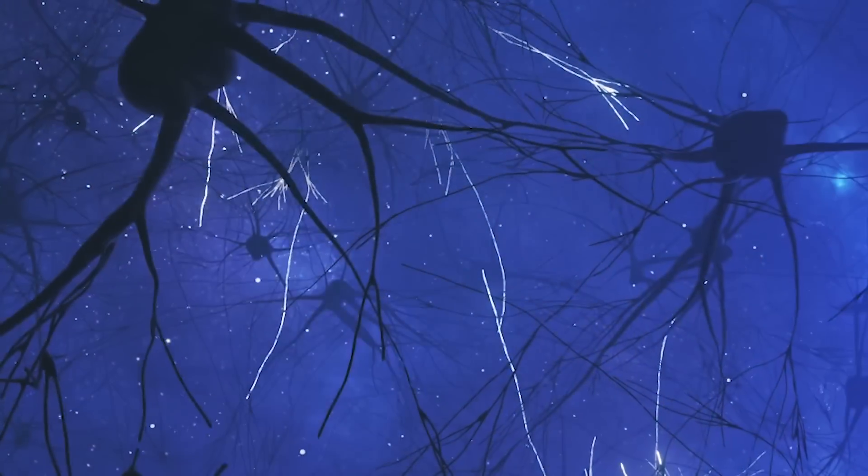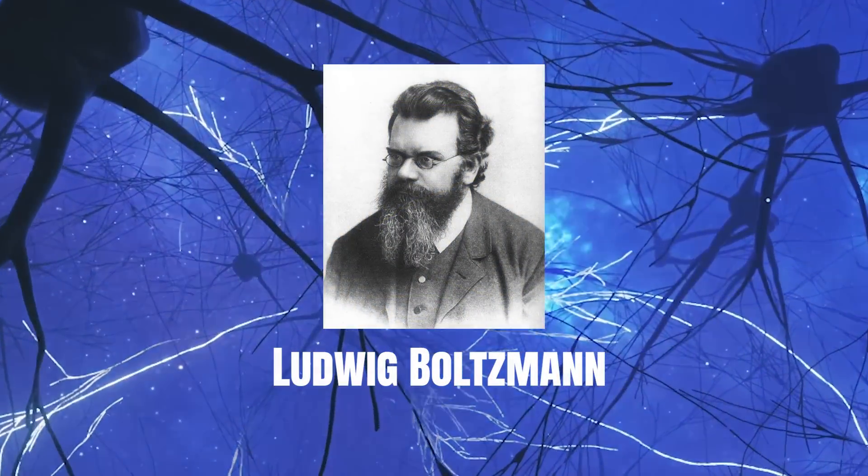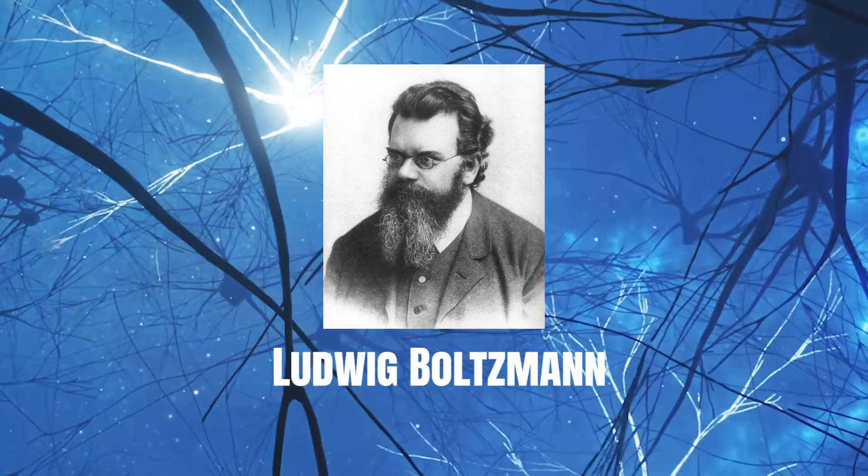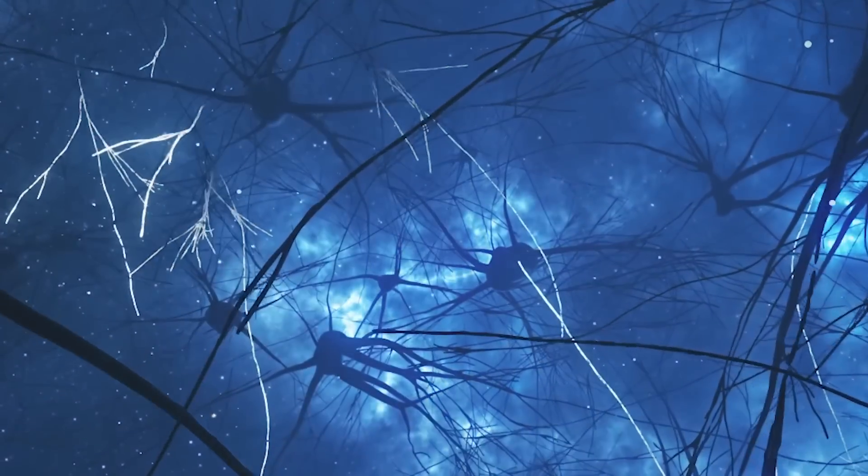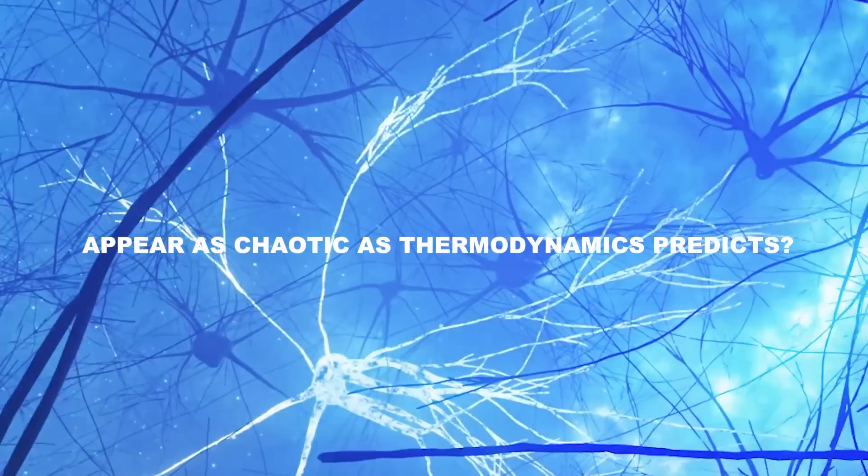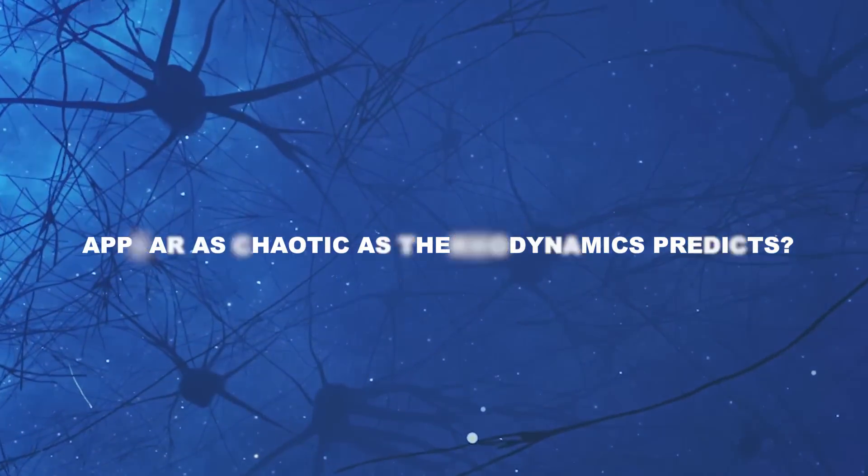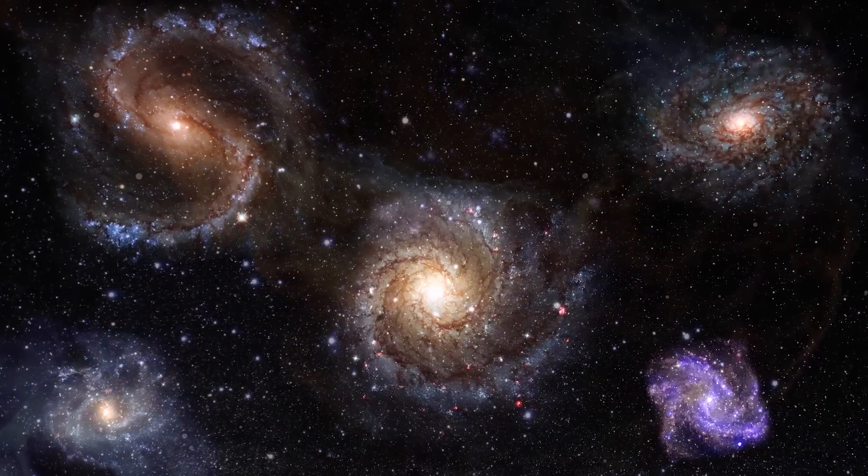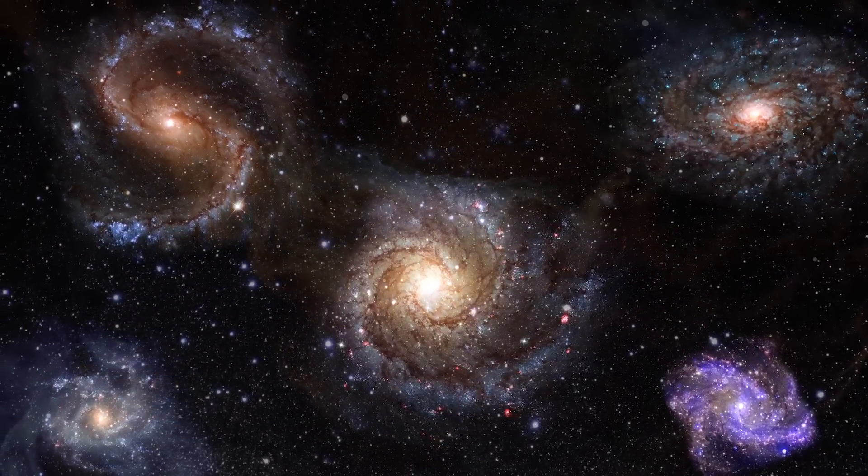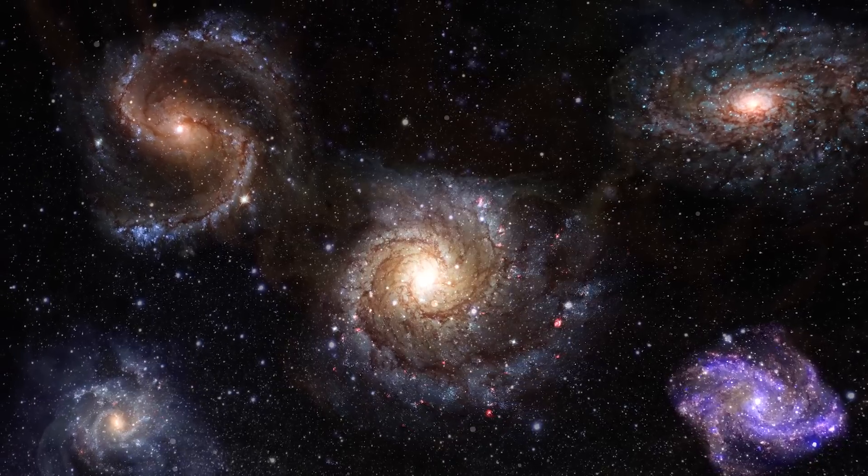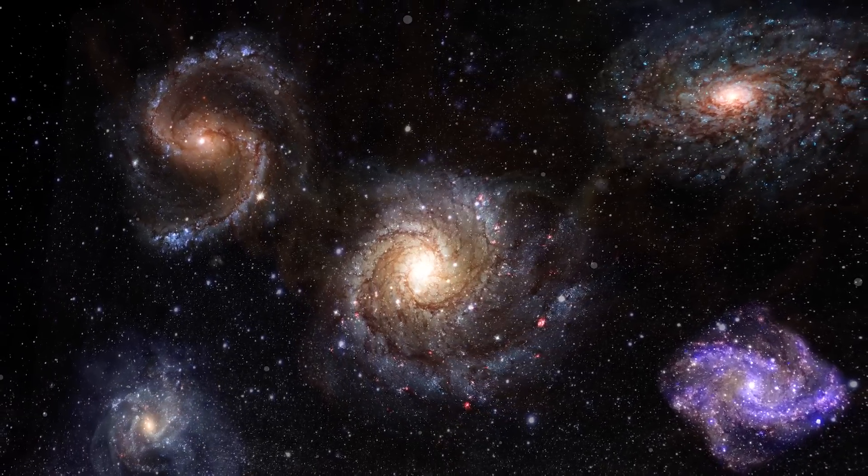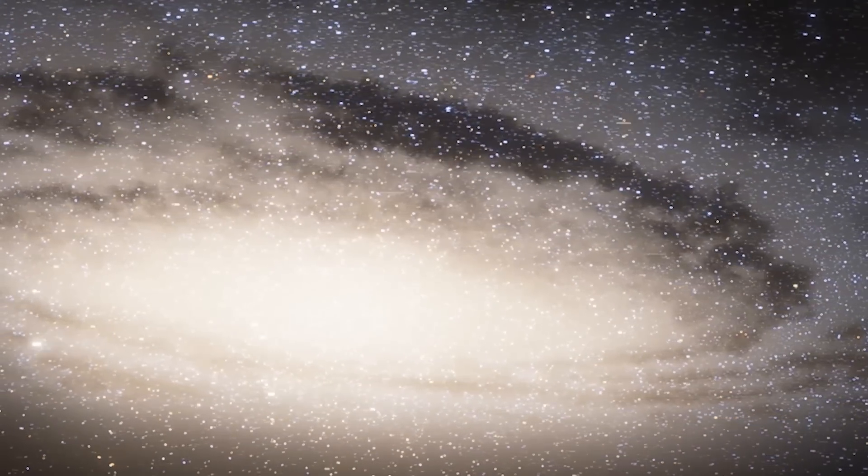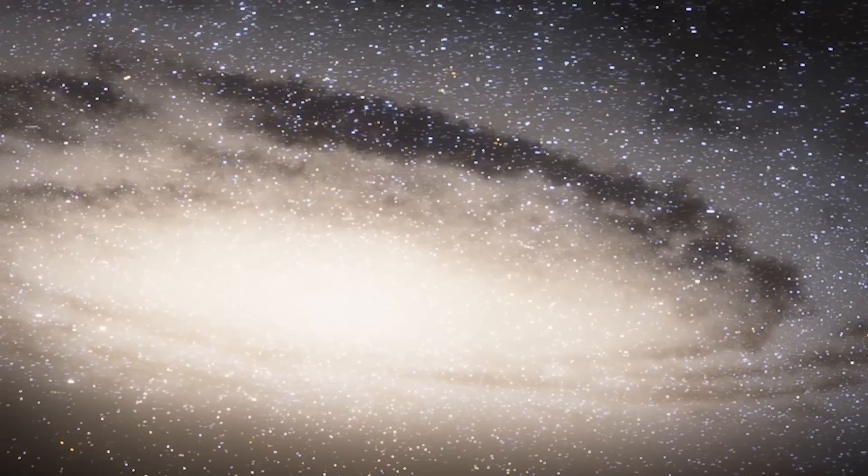In 1896, Austrian physicist Ludwig Boltzmann put forward a theory to tackle an intriguing question. Why doesn't the universe appear as chaotic as thermodynamics predicts? Boltzmann grappled with the second law of thermodynamics, which states that entropy in an isolated system tends to increase over time. This suggests that systems should naturally progress towards disorder.